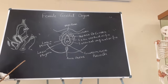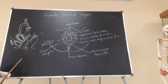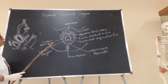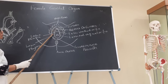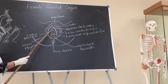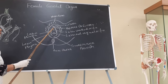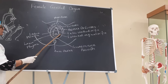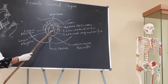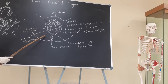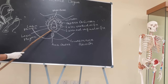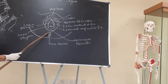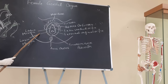Good morning dear students. This part consists of the external female genitalia. The female genitalia consists of mons pubis, labia majora, labia minora, the vestibule, and the bulb of the vestibule. Altogether, this is called the vulva or pudenda. I am now describing each one by one.